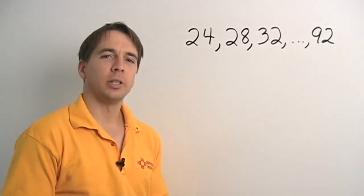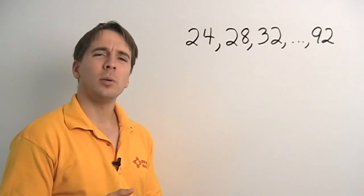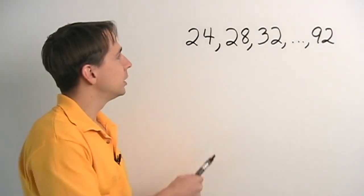Now that we've mastered counting lists in which numbers go up by one each time, we should ask ourselves, what about lists that go up by something other than one? For example, check out this list.